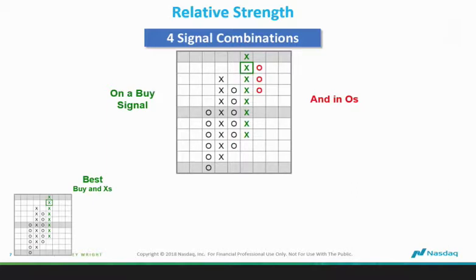When you're on a buy signal, you own the numerator. If I'm looking at IBM versus Pepsi, IBM is the numerator and Pepsi is the denominator. I divide the price of Pepsi into IBM, get a number, plot it on the chart. When it's on a buy signal, it says own the numerator. When it's on a sell signal, it says own the denominator. In between, you have that short-term move where it's in a column of O's.